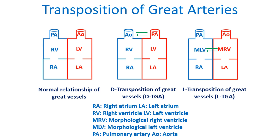Here is a diagram showing the comparison between normally related great vessels, transposition of great arteries, and corrected transposition of great arteries. The transposed ventricles in LTGA are called the morphological right ventricle and morphological left ventricle, as they are situated on the opposite side.